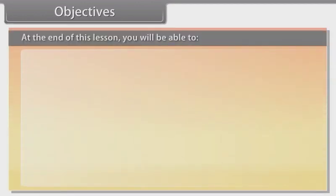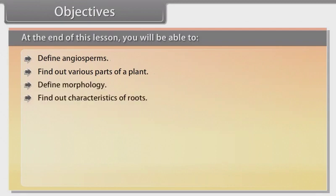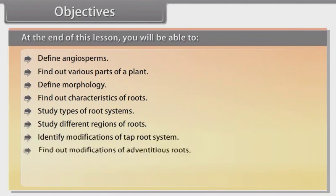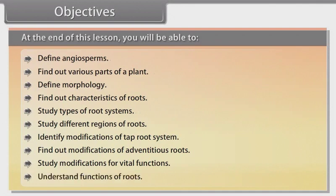At the end of this lesson you will be able to: define angiosperms, find out various parts of a plant, define morphology, find out characteristics of roots, study types of root systems, study different regions of roots, identify modifications of tap root system, find out modifications of adventitious roots, study modifications for vital functions, and understand functions of roots.